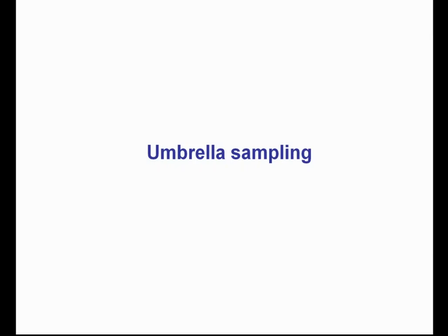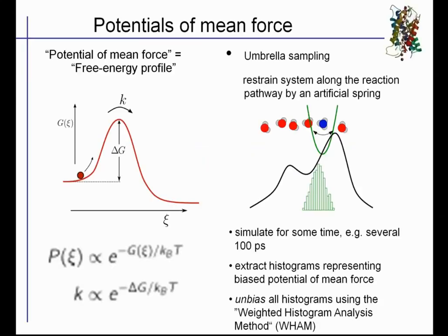What if we are not visiting all the states spontaneously? We can help the system somewhat, but then we have to worry about how we are biasing it. In umbrella sampling, we want to extract an underlying free energy profile. The barrier shown here — this ΔG — might be too high to overcome in a microsecond-long simulation. So we can force the system to overcome this barrier by applying an additional harmonic potential to force the molecule anywhere we want it to be, even to very high free energy regions.